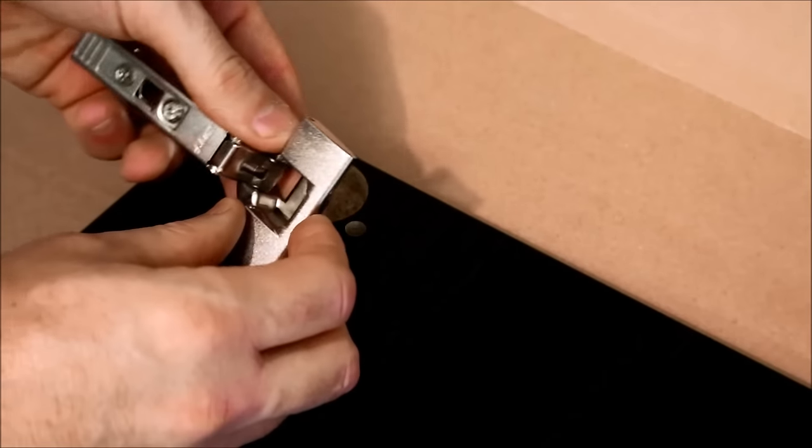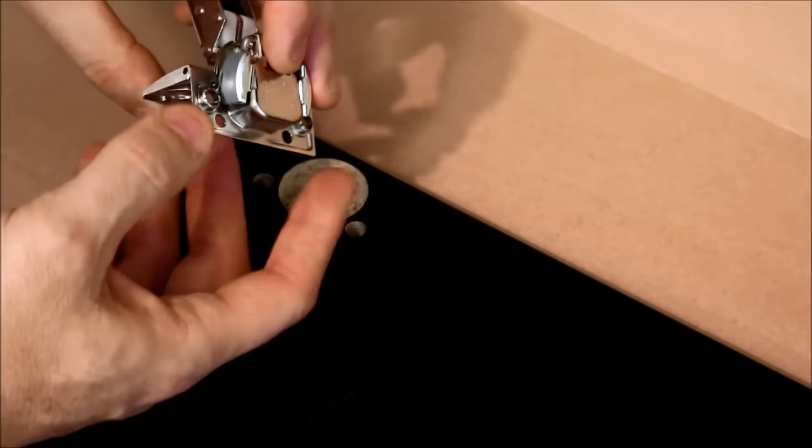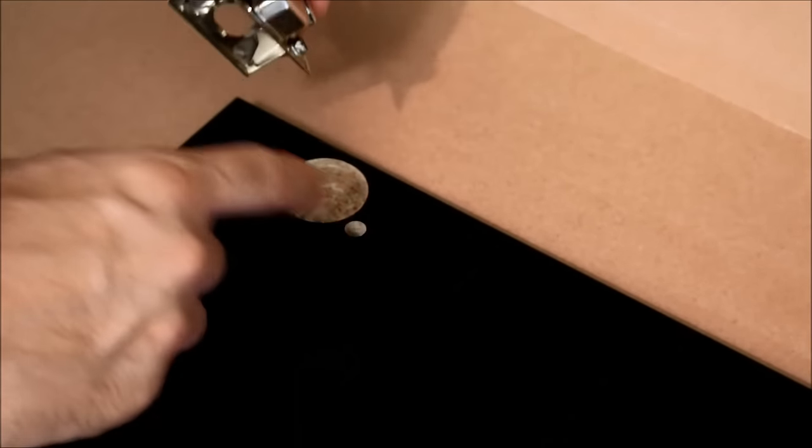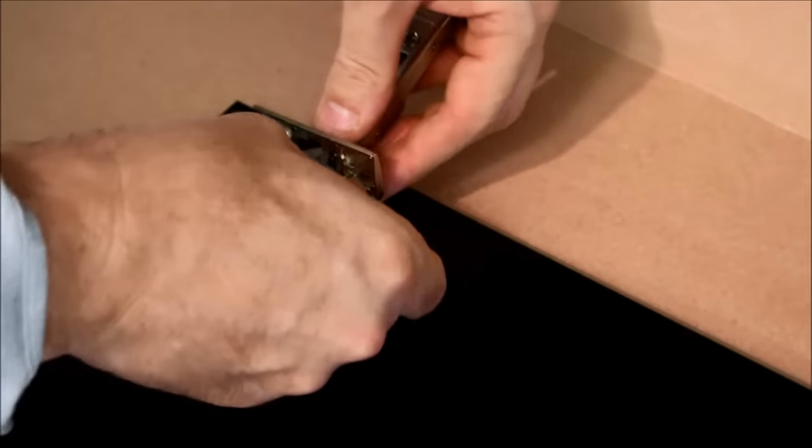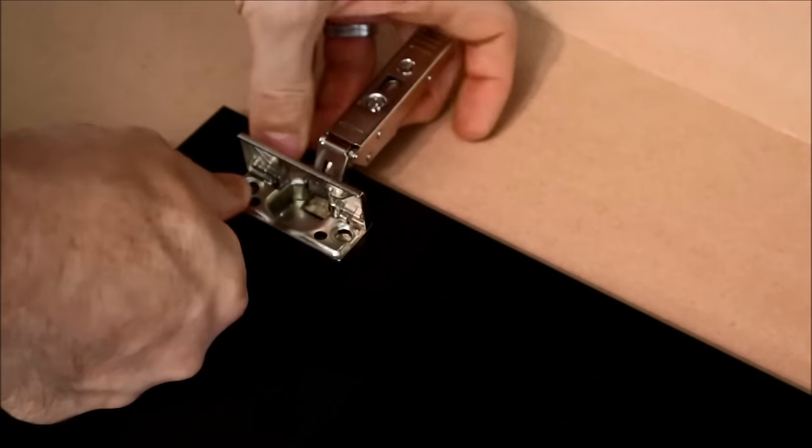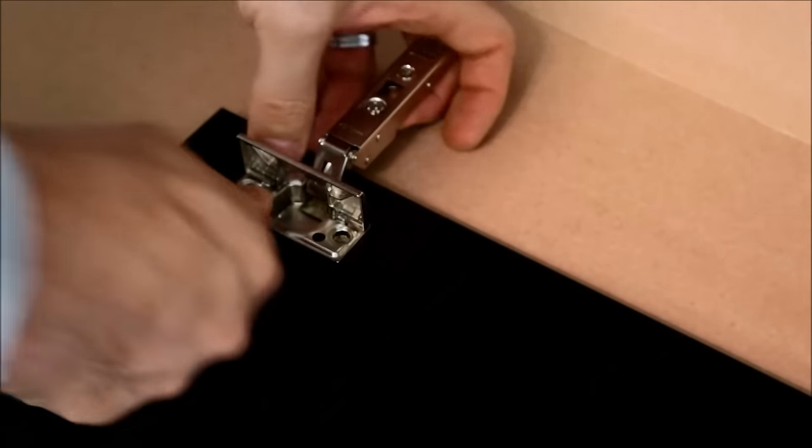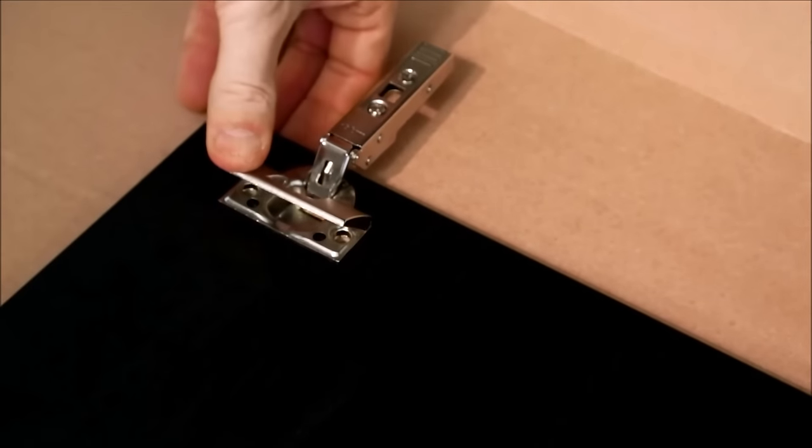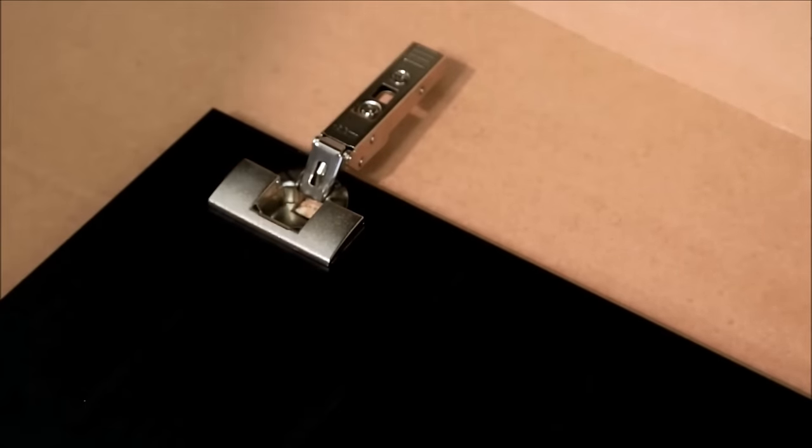To put the door part of the hinge on, you need to pull that lever back, line up these two pieces with those two holes there. You need to push it all the way in, make sure that it is flush and then snap that over.